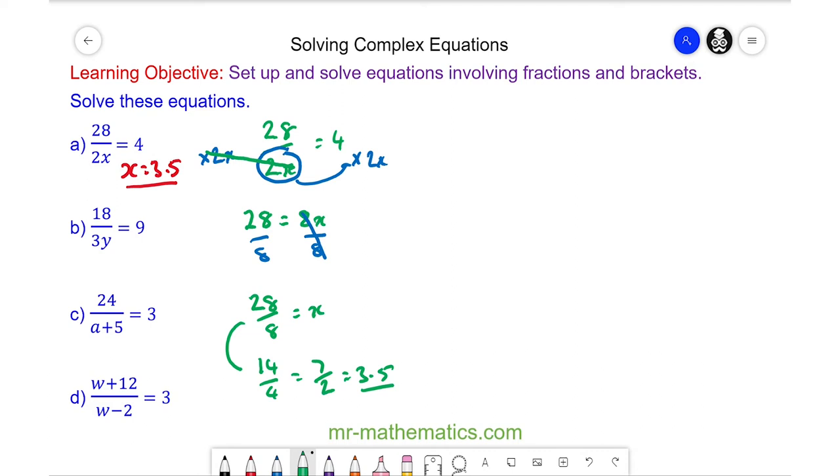So for question b we have 18 over 3y is equal to 9. We begin by moving the division of 3y to the other side. We do this by multiplying both sides by 3y and these will cancel.